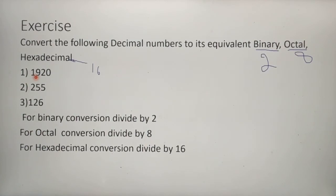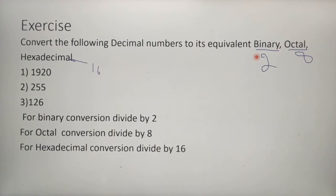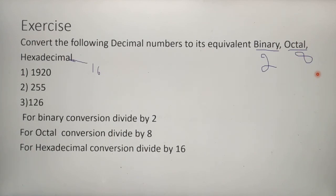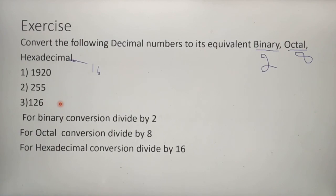We are given an exercise from the textbook: convert the following decimal numbers into their equivalent binary, octal, and hexadecimal numbers. For binary, divide by 2 until the quotient is 1. For octal, divide by 8 until the quotient is less than 8. For hexadecimal, divide by 16 until the quotient is less than 16. Thank you.